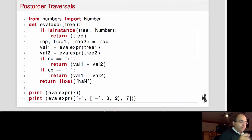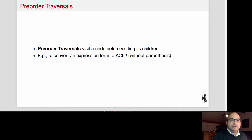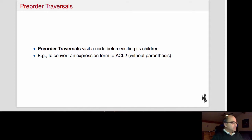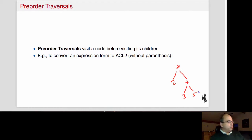Now, what other traversals can we do? We can do pre-order traversals. In a pre-order traversal, we visit the node first and then visit the children. This also has quite a few uses. For example, let's take an expression tree with times at the root, two on the left, and plus on the right with children three and five.